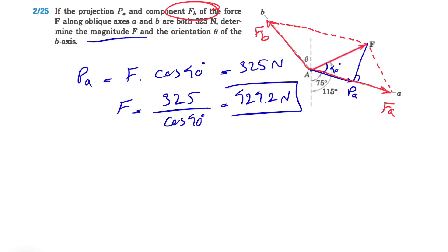We just have to figure out some angles. We already found F = 424.2 Newtons, and we know Fb = 325 Newtons. All we need to do is use the law of sines. Let's call this angle here alpha.